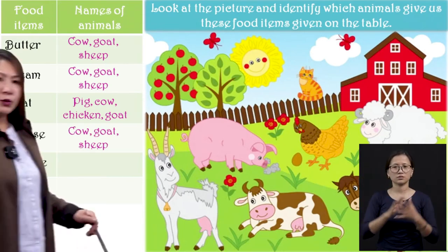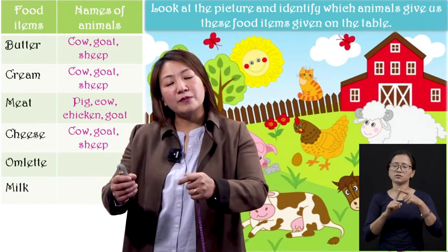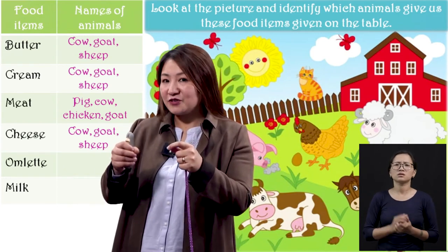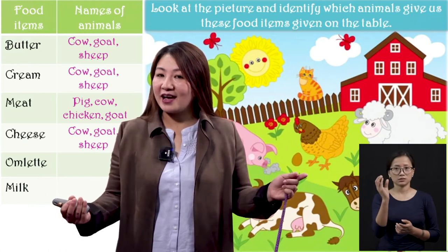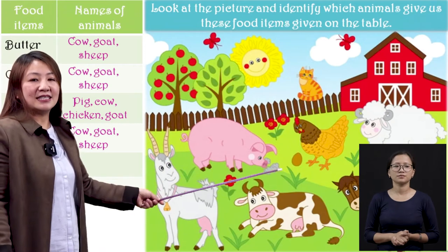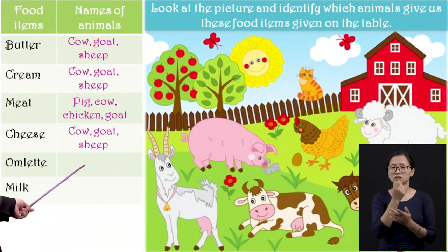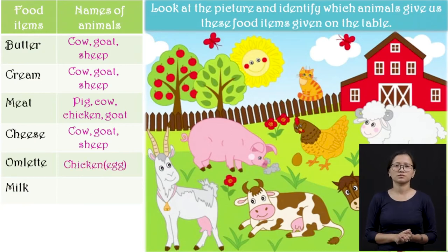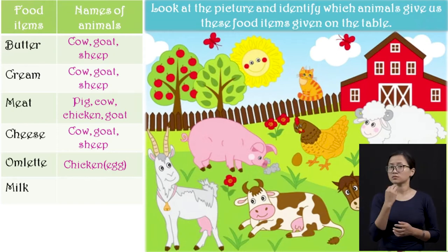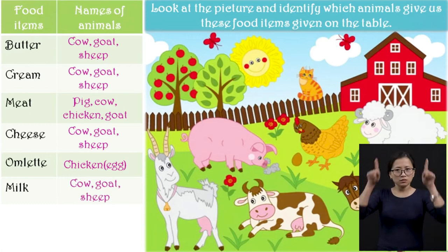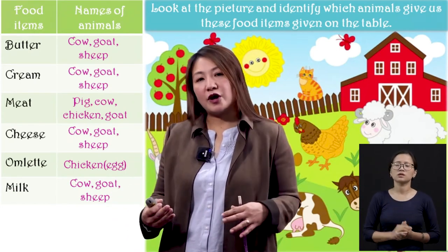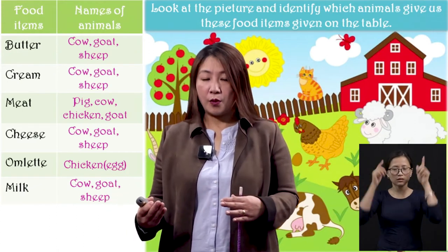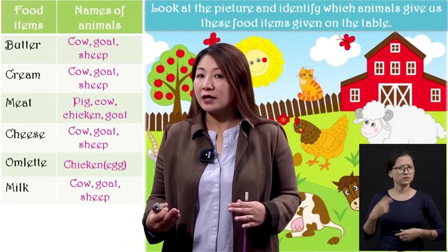Now omelette — do you know what is an omelette, children? In the morning, your mummy will make you a dish from an egg. That is known as omelette. So omelette is made from eggs, and eggs come from chicken. Then milk — we usually get milk from cow and goat. Milk is given by cow, goat, as well as sheep. But here in Nagaland, we don't find sheep, so we usually take milk from goat and cow. These are the animals which give us all these different food items.